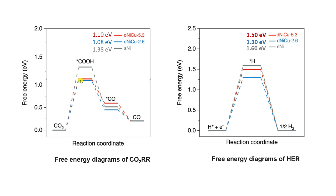Next is the hydrogen evolution reaction. For NiCu 5.3 the limiting potential is 1.50 eV, for NiCu 2.6 it is 1.30 eV, and for pure nickel it is 1.60 eV. The hydrogen adsorption on pure nickel is very weak compared to NiCu 2.6, and NiCu 2.6 is also significantly weaker than NiCu 5.3. These are the limiting potentials for CO2RR and HER.